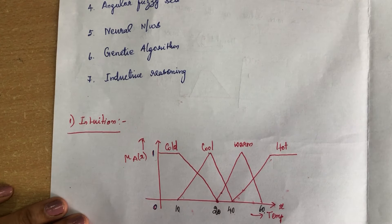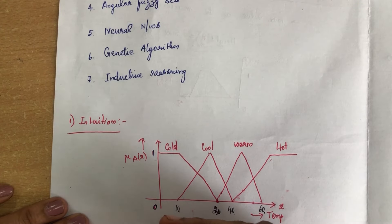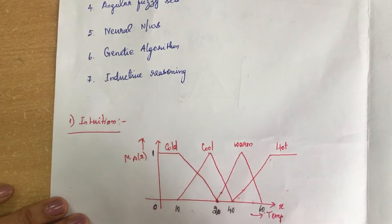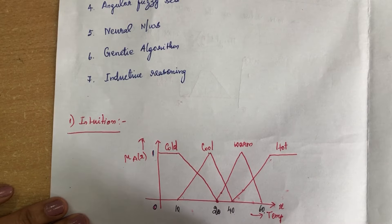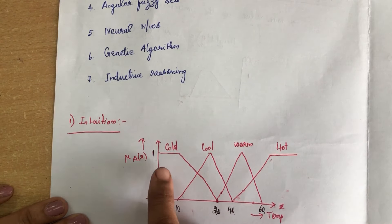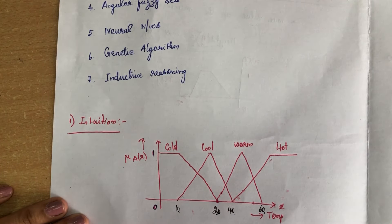So if any problem is given, the first step is fuzzification — converting the crisp value into a fuzzy variable. After converting to a fuzzy variable, we can draw the membership function on our own. This method is called the intuition method.